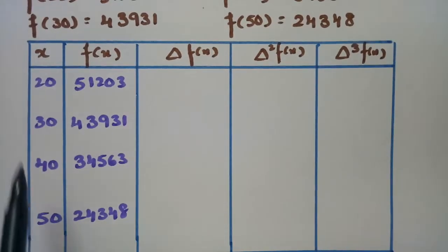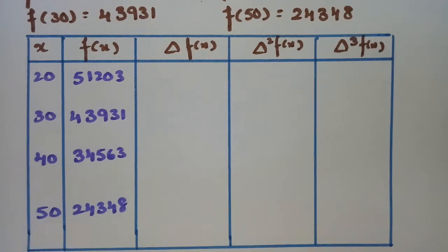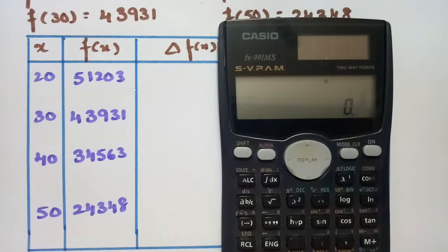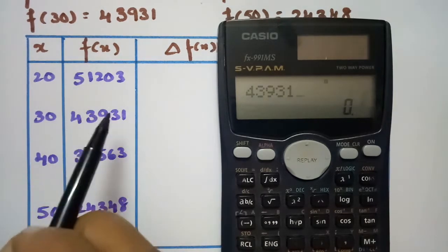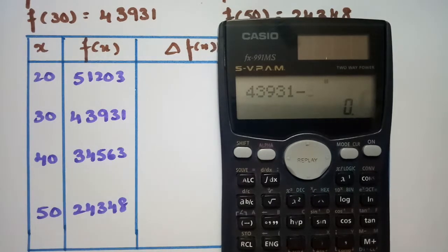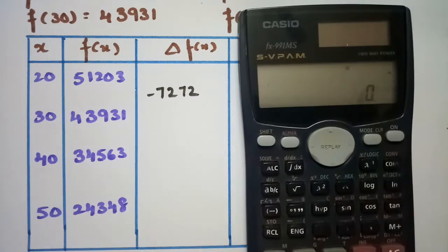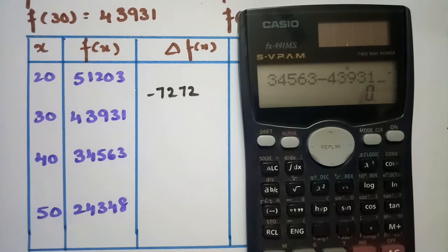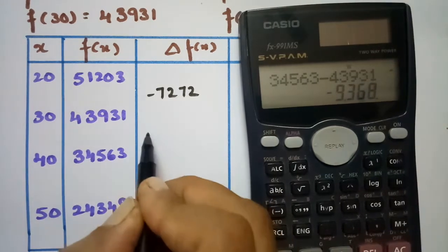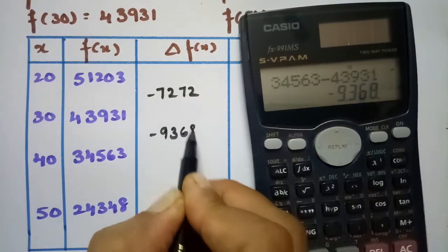See the forward difference table here. The x values are listed and the corresponding f(x) values are noted. The first differences are computed by subtracting consecutive values: 43931, 345630, giving differences of -9368 and so on. We subtract y2 minus y1 to get the first difference column: the values are -7272, then -9368.